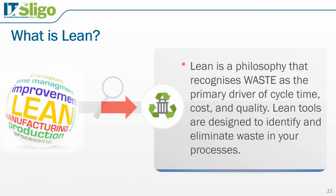The three key metrics or key performance indicators in any organization are time, cost, and quality. Lean in particular focuses on cycle time and lead time within those. By using the lean tools, we can identify and eliminate waste — in other words, reduce time, reduce cost, and improve quality in your processes.